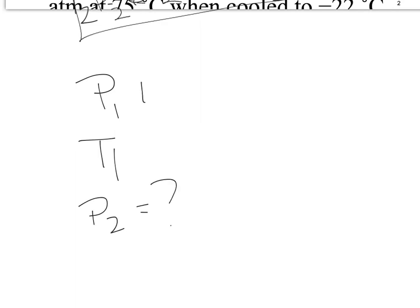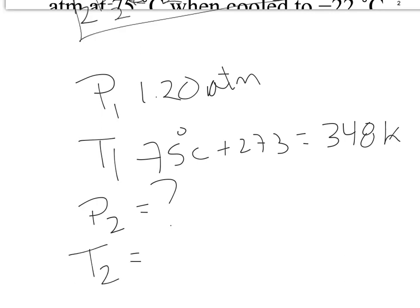The initial pressure is 1.20 atm, and the initial temperature is 75 Celsius. We need to convert that to Kelvin, so T1 is equal to 348 Kelvin. And the final temperature was negative 22 Celsius. So, we're going to convert that to Kelvin, and that is 251 Kelvin.